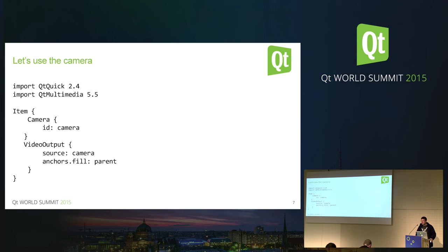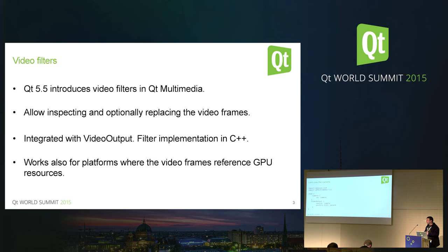Before Qt 5.5, there wasn't really any easy way to do additional processing. Of course, you could use shader effects and so on, which is one thing — but that's a bit limited in some cases. That's why there is this small addition to Qt Multimedia in Qt 5.5, which we call video filters.